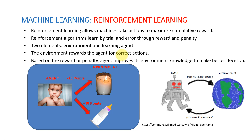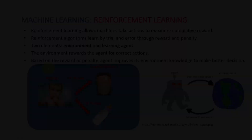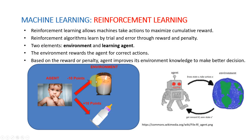The third category is reinforcement learning, which allows machines to take actions to maximize cumulative reward. For example, imagine a baby left in a room who tries to discover the elements within it. The baby touches a candle, gets burned, and learns there is a penalty associated with touching the candle — so they never do it again. That's reinforcement learning.